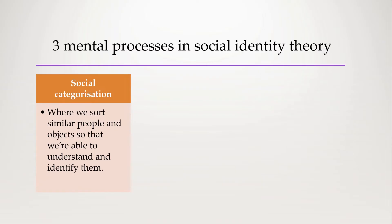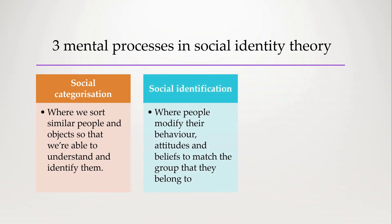Social identification involves people modifying their behavior to match the group that they belong to. For example, if I identify as being a Queenslander, then I'll probably support the Maroons and complain about the cold weather. All this affirms that I'm part of this group.